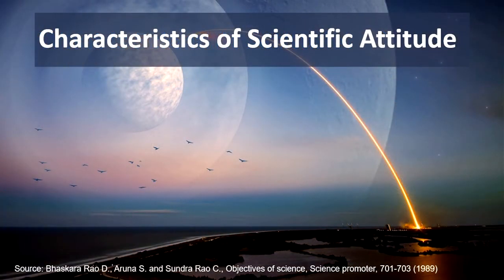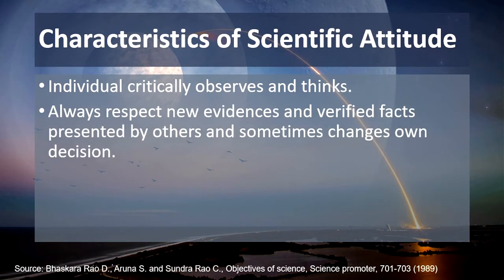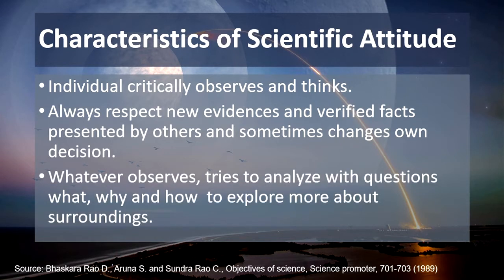To understand what scientific attitude is, we need to see certain characteristics. First, an individual critically observes and thinks. A person with scientific attitude uses critical observation and thinking to look towards any incident. It is believed that such a person always respects new evidences and verified facts presented by others, and sometimes changes their own decision. Whatever they observe, they try to analyze it with questions of what is happening, why is it happening, how is it happening, to explore more about the surroundings.